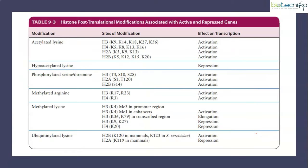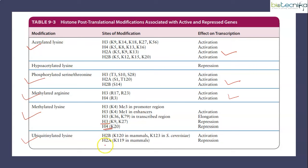A table shows different histone modifications — for example, acetylated lysine in all four core histones at different positions, phosphorylated serine, methylated arginine, methylated lysine, and ubiquitinylated lysine. In the majority of cases, the modification results in transcriptional activation. In a few cases, like methylation at H3 and H4 positions and ubiquitination at H2A, it results in repression. In our question, serine-1 of H2A is phosphorylated, and this results in activation. So statements B, C, and E are confirmed correct.